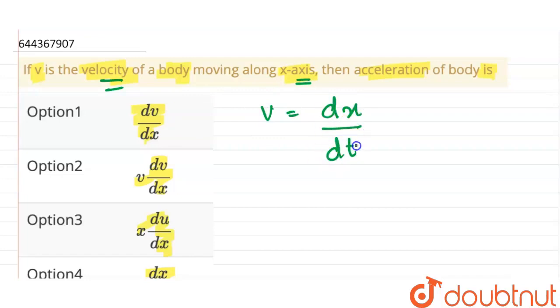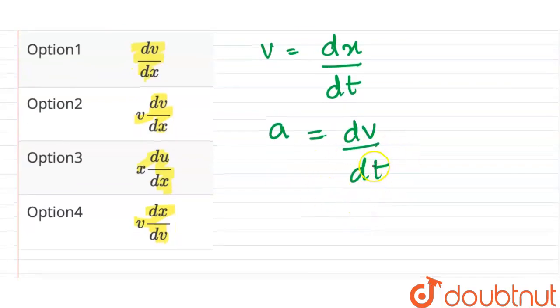And we know acceleration is rate of change of velocity, that is dv by dt. Alright, so from here we can write, we can change dt. That is, from the first equation, dt is equal to dx upon v.